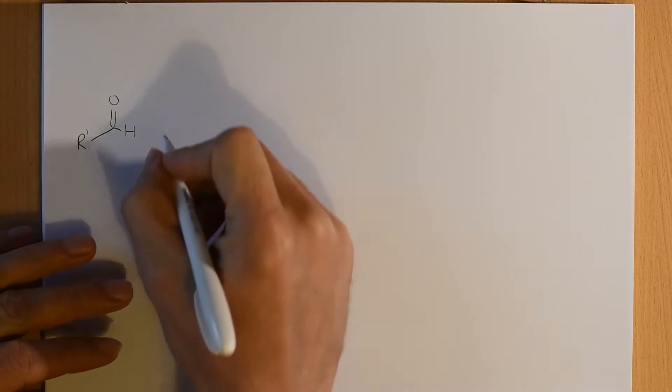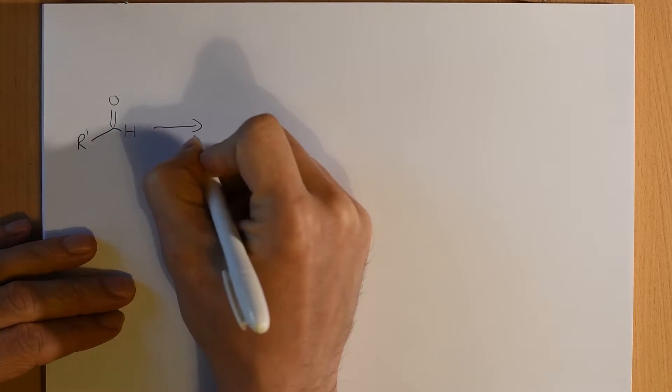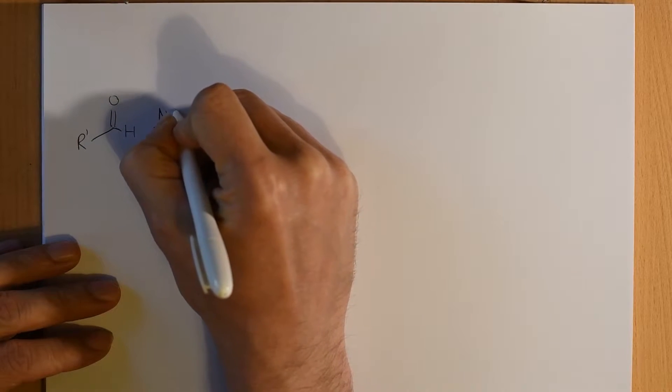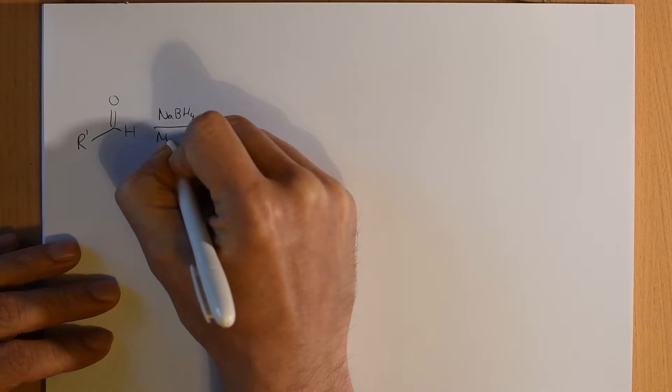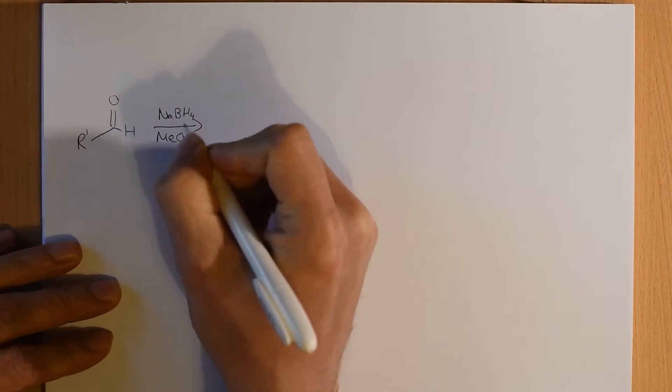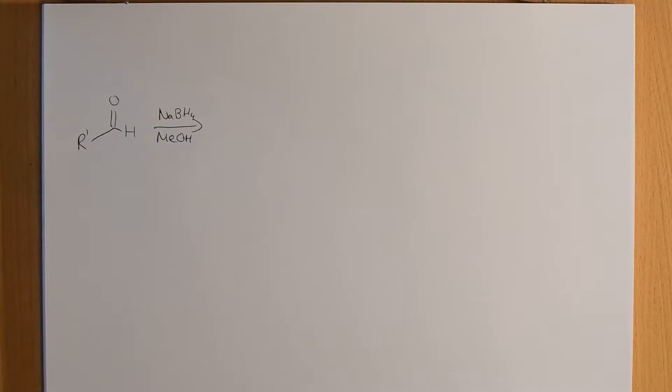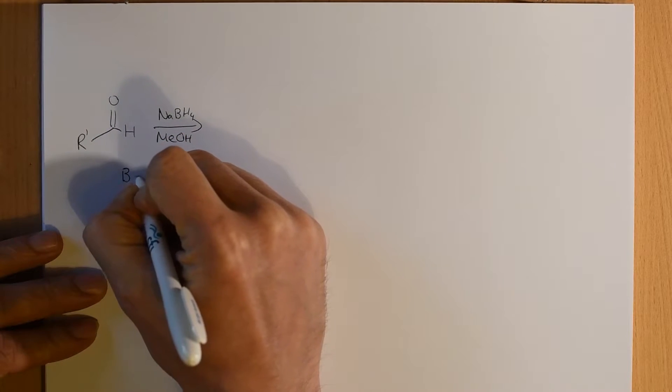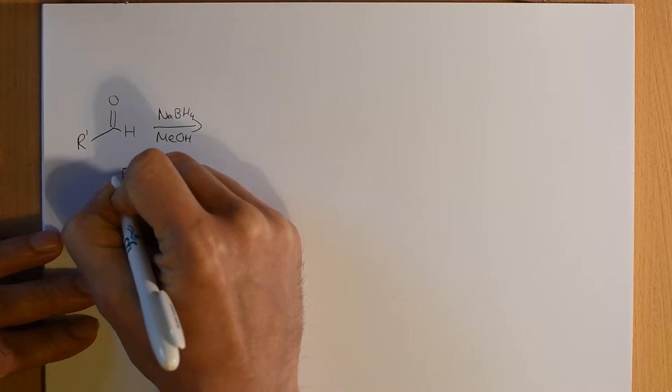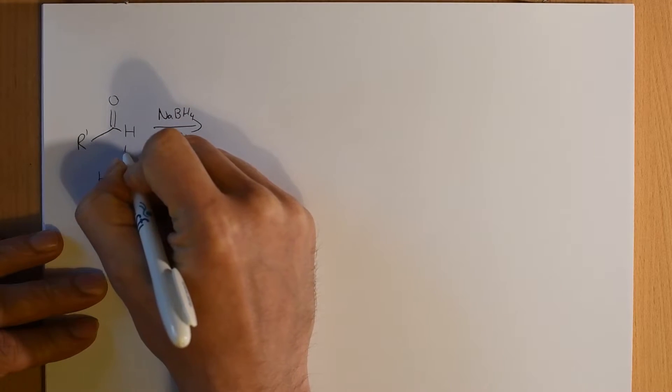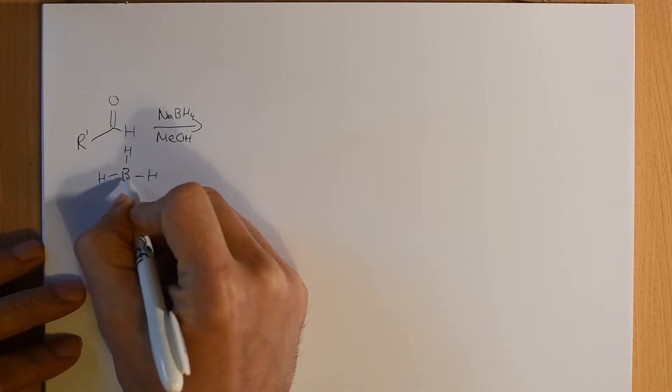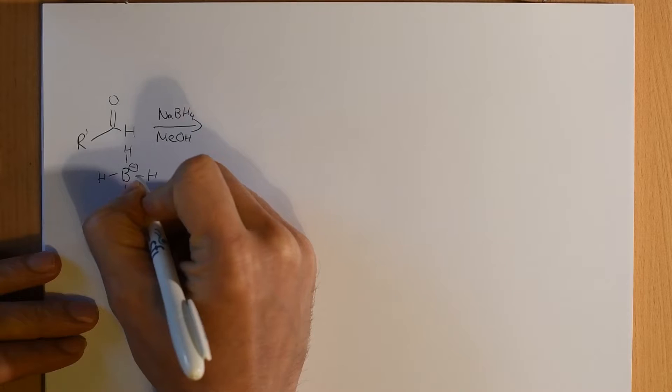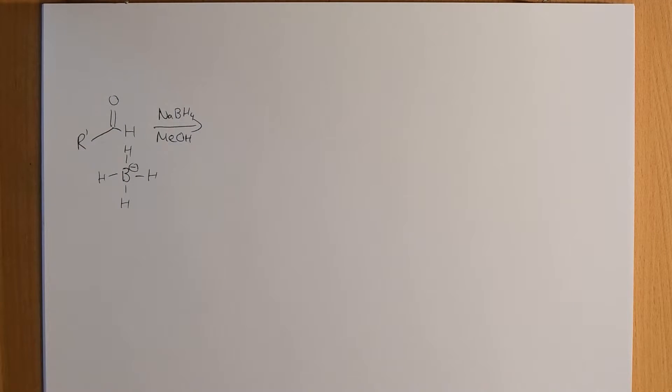And if you treat this aldehyde in reducing conditions with sodium borohydride, then you're going to use sodium borohydride, and usually you'll do it in an alcohol solvent, a protic solvent, methanol will do nicely. The borohydride, BH4, so that's four sigma bonds to an sp3 hybridized boron, which has a charge of minus one, because it's a group three element, and it's got four bonds to it.